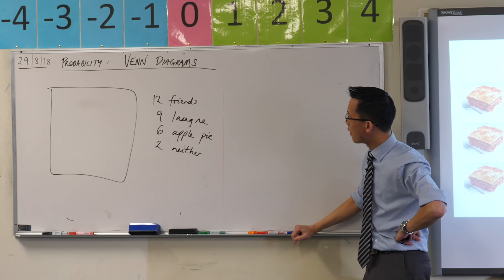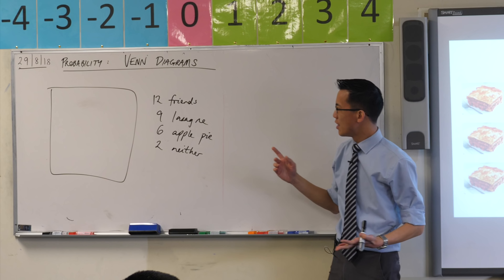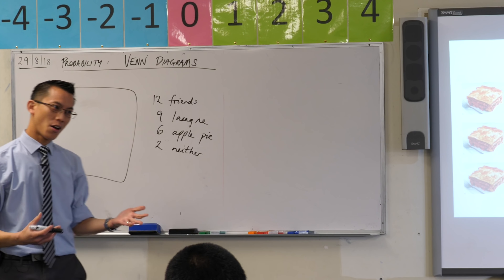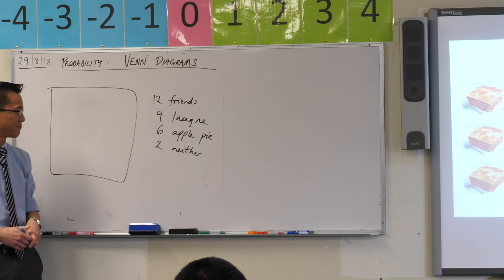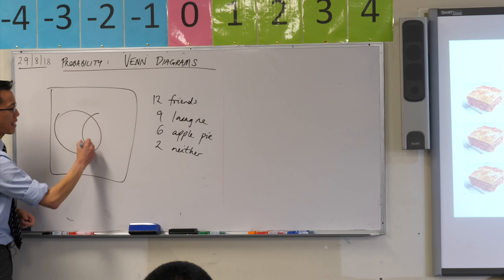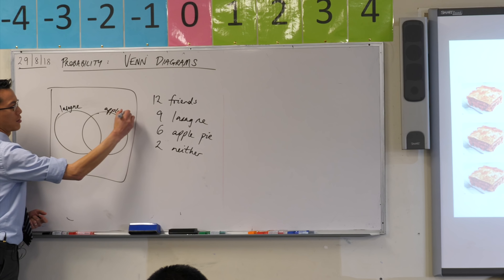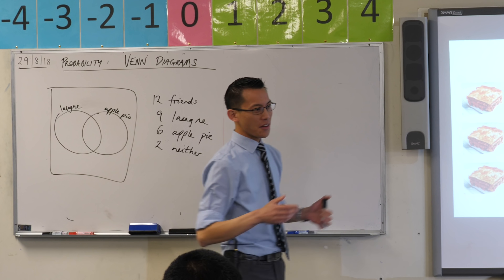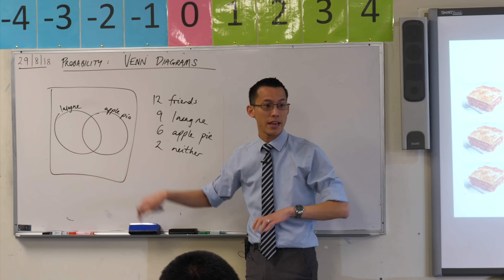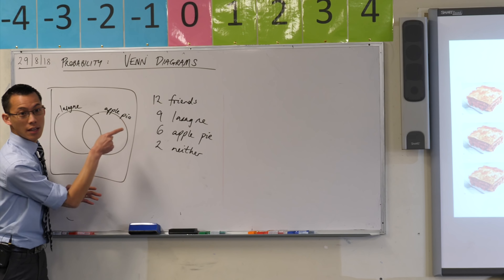There are lots of different kinds of Venn diagrams, but since you've got a group of friends and two categories framing the entire question, your Venn diagram will use two circles — one for each category. I'll make one the lasagna circle and the other the apple pie circle. A finished Venn diagram is an exceptionally simple object — just a few numbers — and it tells you everything you need to know. It's a very efficient way of communicating.